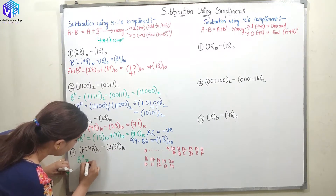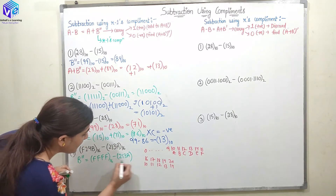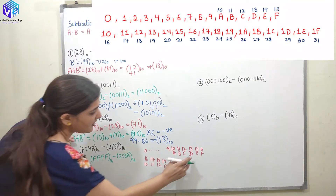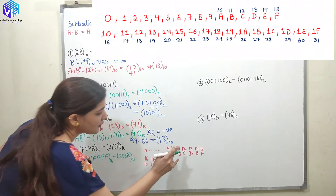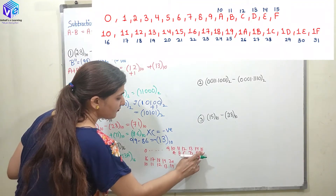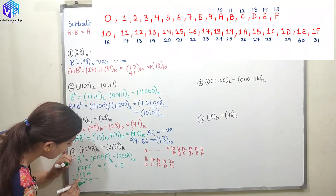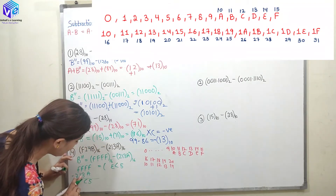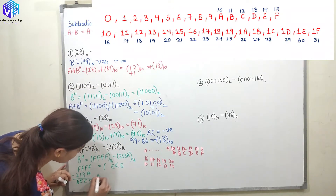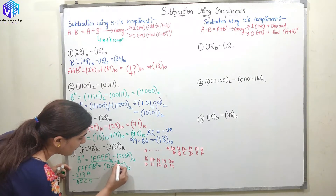First we have to find out B double dash, which is FFFF minus 213A. F minus A: 15 minus 10 is 5. F minus 3: 15 minus 3 is 12, which is C. F minus 1: 15 minus 1 is 14, which is E. F minus 2: 15 minus 2 is 13, which is D. So B double dash is DEC5 in base 16.